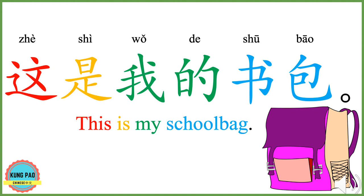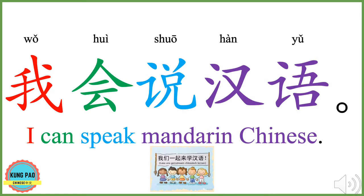这是我的书包。 这 means this. 是 means is. 我的 means my. 书包 means school bag. 书 means book. 包 means bag. 书包 means school bag. 这是我的书包。